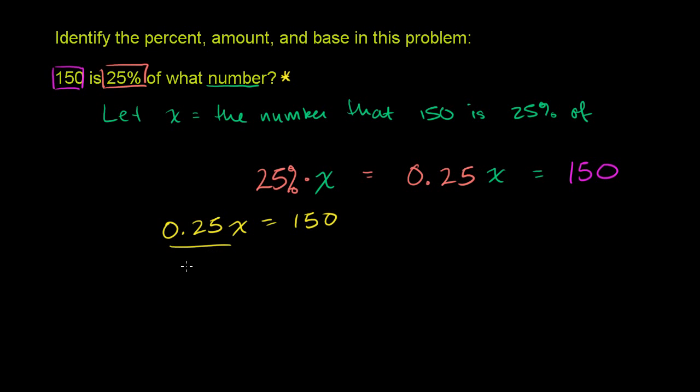So let's just divide both sides by 0.25. That will just be an x, and then the right-hand side will be 150 divided by 0.25. And the reason why I want to do this is really it's just good practice dividing by a decimal, so let's do that. So we want to figure out what 150 divided by 0.25 is.